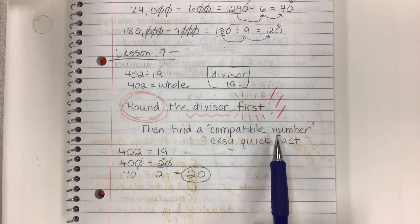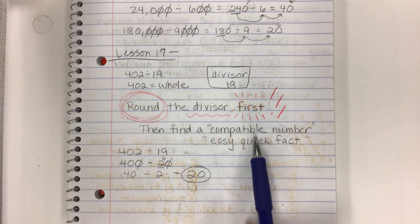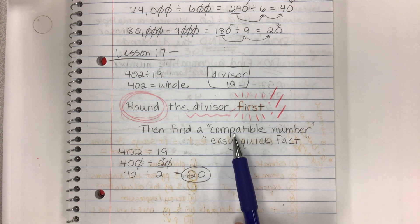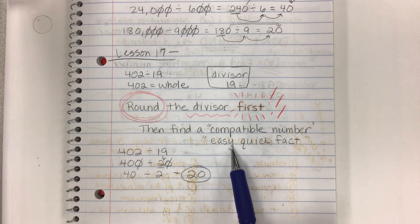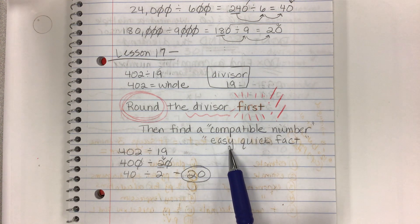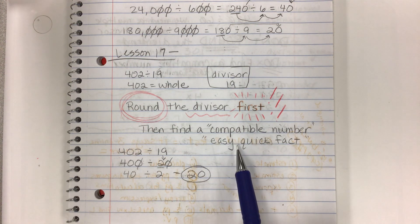Compatible number. Compatible numbers. It's just a big, fancy, super lot of letters way of saying best friends, a quick, easy fact, something that goes together.